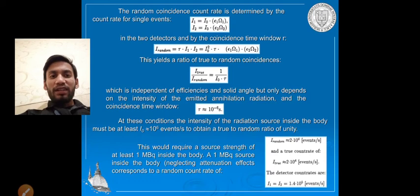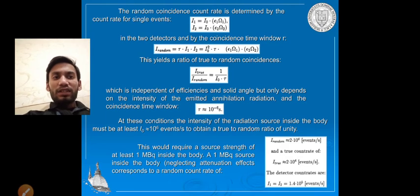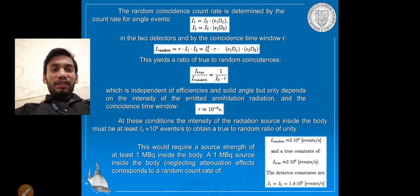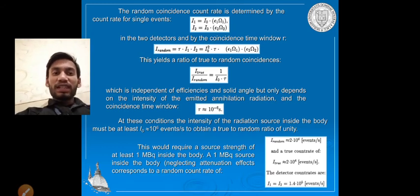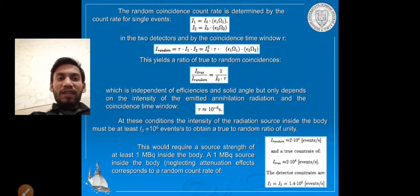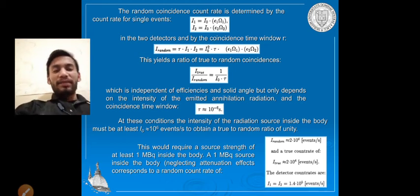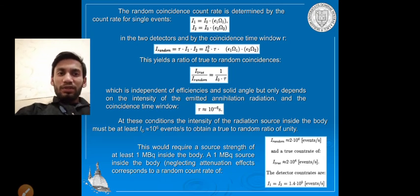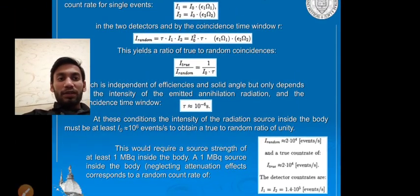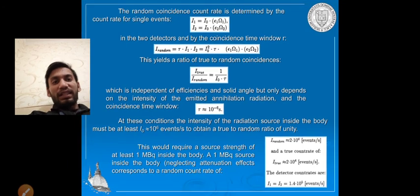Neglecting attenuation, I_random equals 2×10^4 events per second, and the true count rate I_true is also approximately 2×10^4 per second. Since I1 equals I2, the average event rate taken is about 1.4×10^4 events per second.